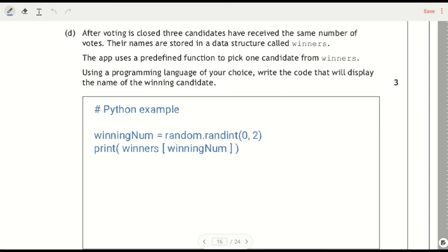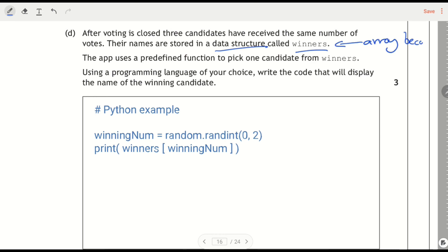After voting is closed, three candidates receive the same number of votes. They're stored in a data structure called winners. So data structure called winners, so that must be an array because there are three of them. The app uses a predefined function, so you should be thinking right, predefined functions we've got length, random and round. To pick one candidate, so to pick one, that must be random. Using the programming language of your choice, write code that will display the name of the winning candidate.